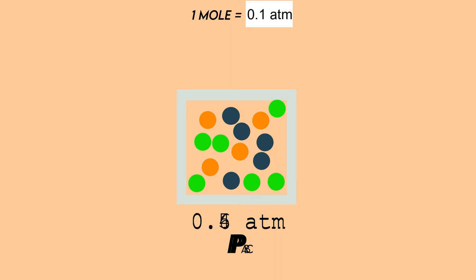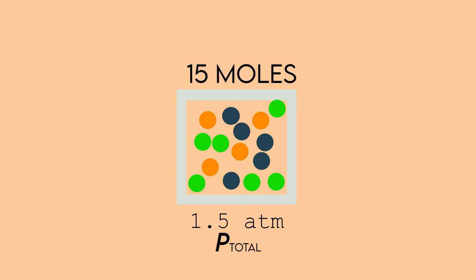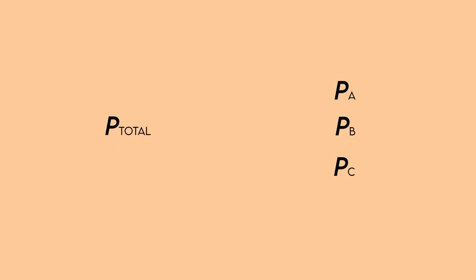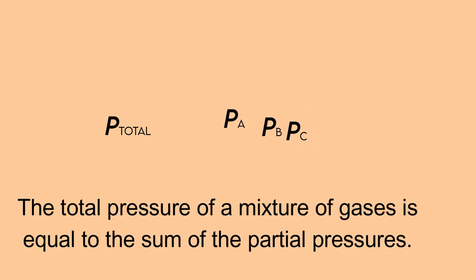And if we combine them — just like our fruits a moment ago — we get p sub total, which is the total pressure of these gases. Using all those mathematical equations to form a formula, this is where John Dalton's law on partial pressures comes in, which basically states that the total pressure of a mixture of gases is equal to the sum of the partial pressures.